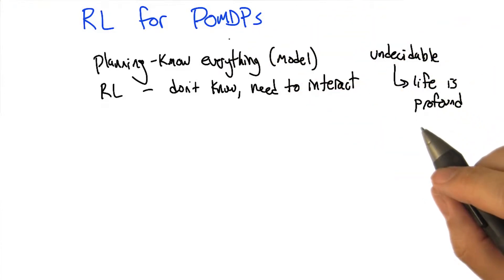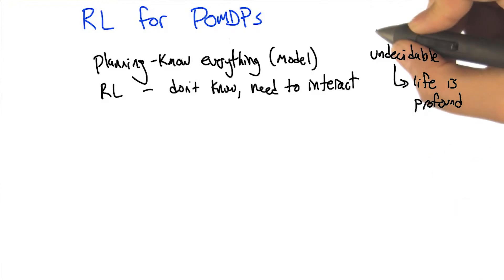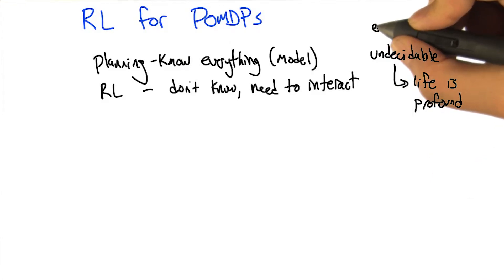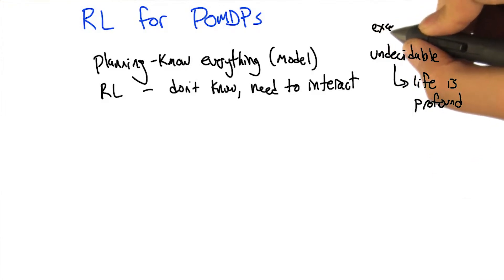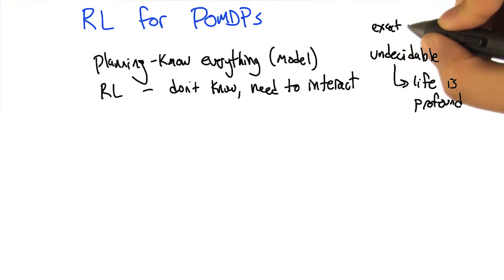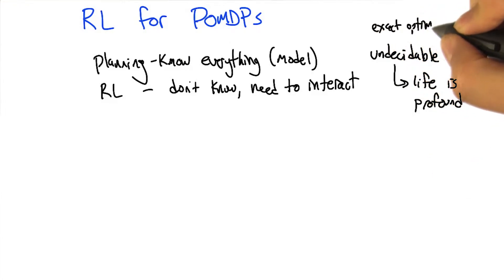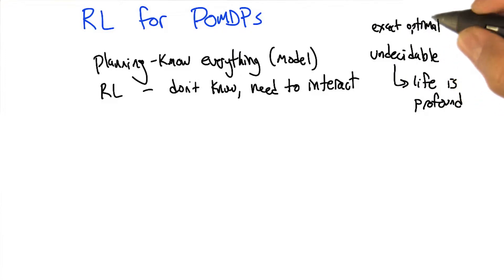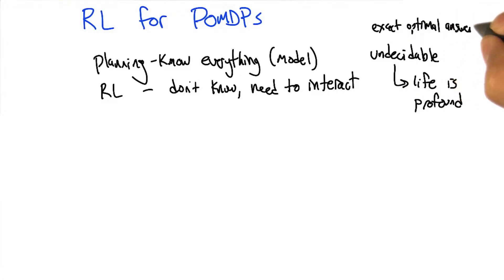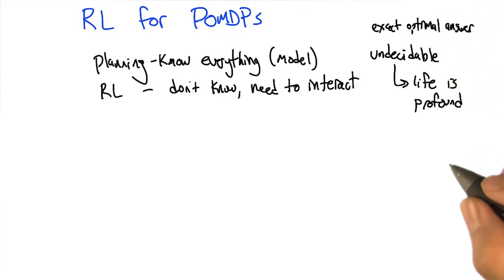Getting the exact optimal answer is undecidable. But is it decidable that you can get near optimal? Yes. Well then I feel better. Why don't you stop depressing me and tell me what to do so that I can sort of feel better about this whole approach?